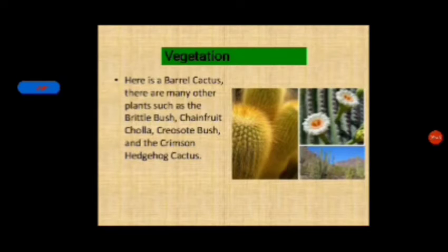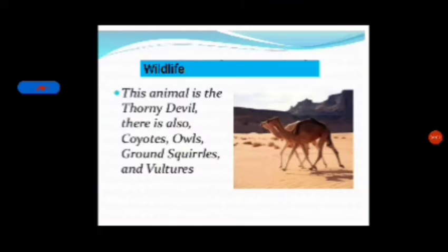In this area the vegetation includes barrel cactus. There are many other plants such as brittle bush, chain fruit, etc. The wildlife in this area includes thorny devils. There are also coyotes, owls, ground squirrels, and vultures.